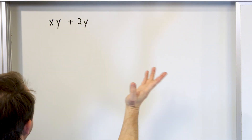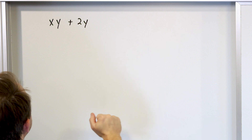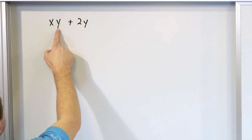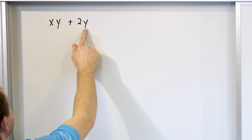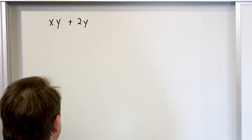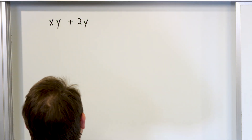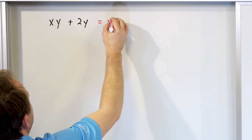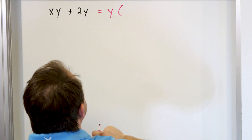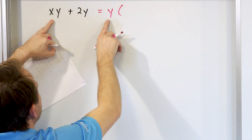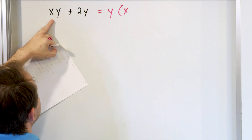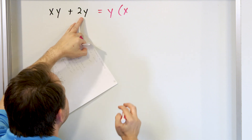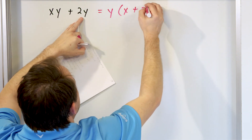There's an x, but there's no x in the second term, so that can't be common. There's a 2, but there's no 2 in the first term, so that can't be common. But there's a y and there's a y — y is common. So I'll say this is common to both terms. I factor out y, and then figure out what goes inside: y times x gives me the first term, and y times 2 gives me the second term.